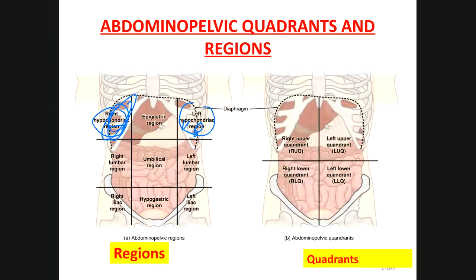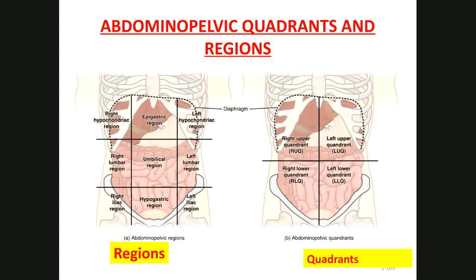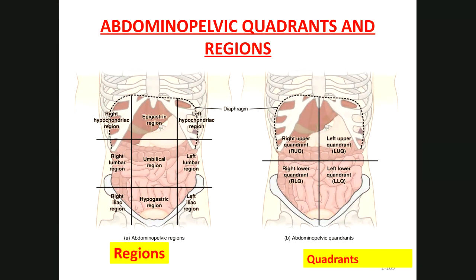Between the hypochondriac regions is the epigastric region — epi means upon, gastro means stomach — so we mostly find the stomach there. Below those are the right and left lumbar regions, which is the waist area between the ribs and the pelvic bone, mainly containing intestines. The umbilical region in the middle also contains large and small intestines. The iliac regions are named after the ilium — the large pelvic bone — and also contain intestines.